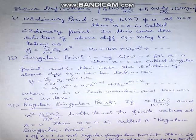Before we discuss the method of solution, we discuss some important definitions. Consider the differential equation p0(x) d²y/dx² + p1(x) dy/dx + p2(x)y = 0. What is an ordinary point? If we substitute x = 0 into p0(x) and the value of p0 is non-zero, then x = 0 is called an ordinary point. In this case the solution is taken as y = Σ aᵣ xʳ.